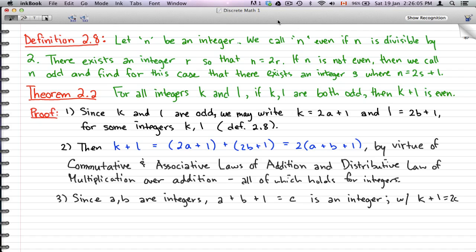So moving on, theorem 2.2 is for all integers k and l. If k and l are both odd, then k plus l is even. Now here I have proofs or written notes, some proofs of why this is, but that's not really important.